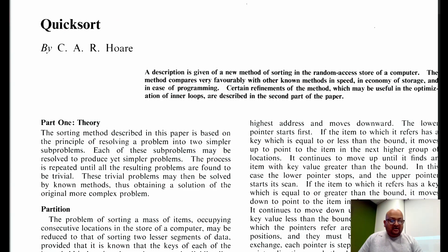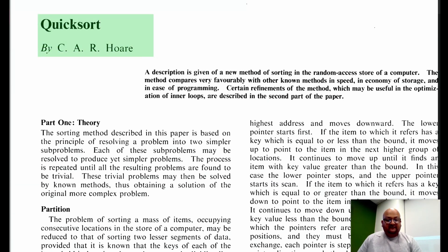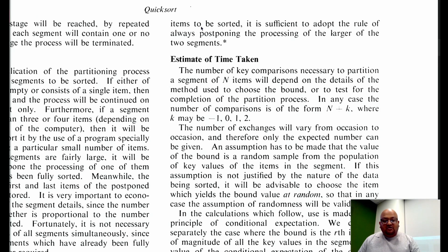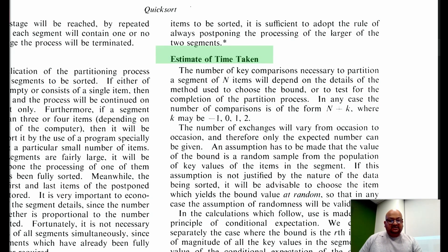Hoare followed up that paper where he first published the Quicksort code with a longer paper in January of 1962, where he presented some more analysis and explanation of the algorithm. Let's go over Hoare's analysis of how much time this Quicksort algorithm takes.